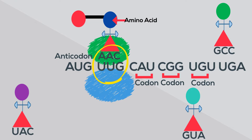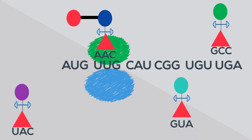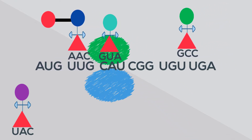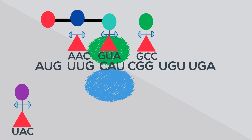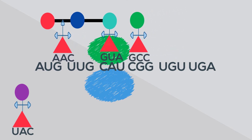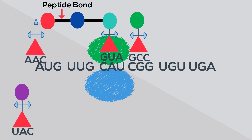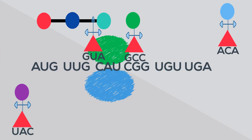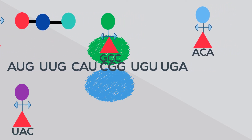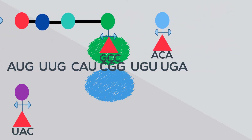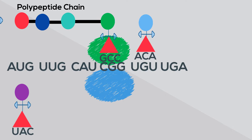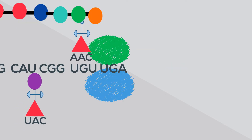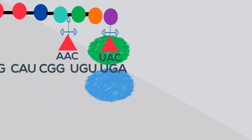As a new transfer RNA moves to the mRNA, the amino acids bond together with a peptide bond, and a string of amino acids begins to form called a polypeptide chain. This process will continue until a stop codon is read.